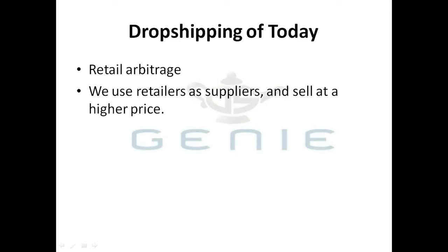That same chest of drawers is currently sold on Amazon for $80. So we have three retail stores — Amazon, eBay, and the supplier — and the item is being sold on all three websites. The volume may differ, but I give that example as hard evidence that this actually works. For those of you who currently dropship, that example is of no consequence because you already know it works.